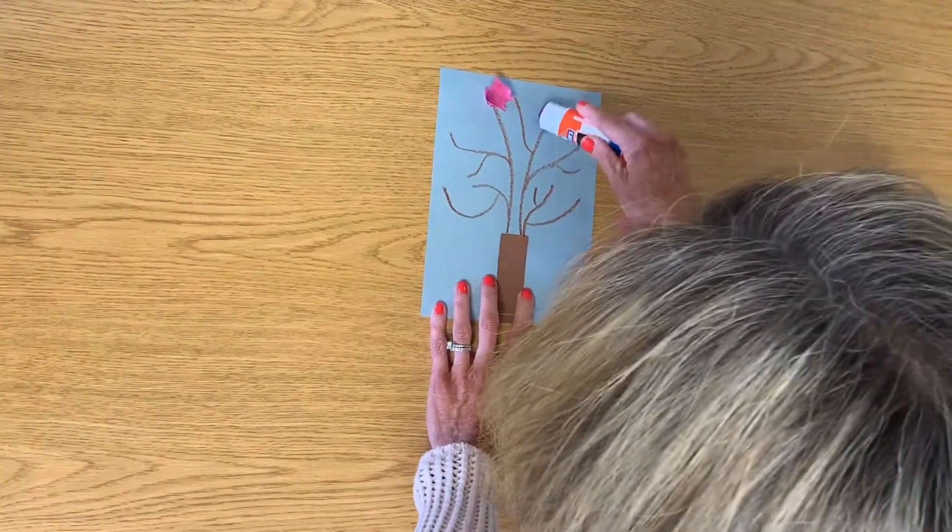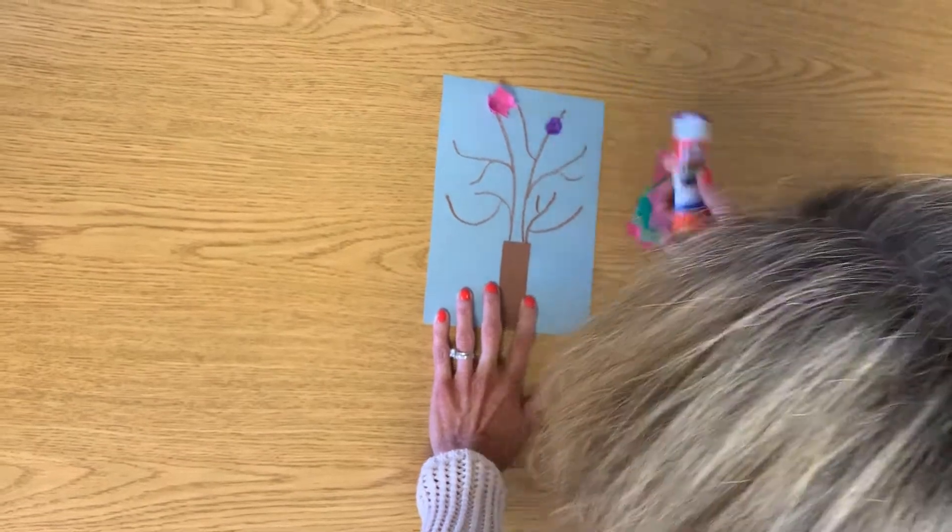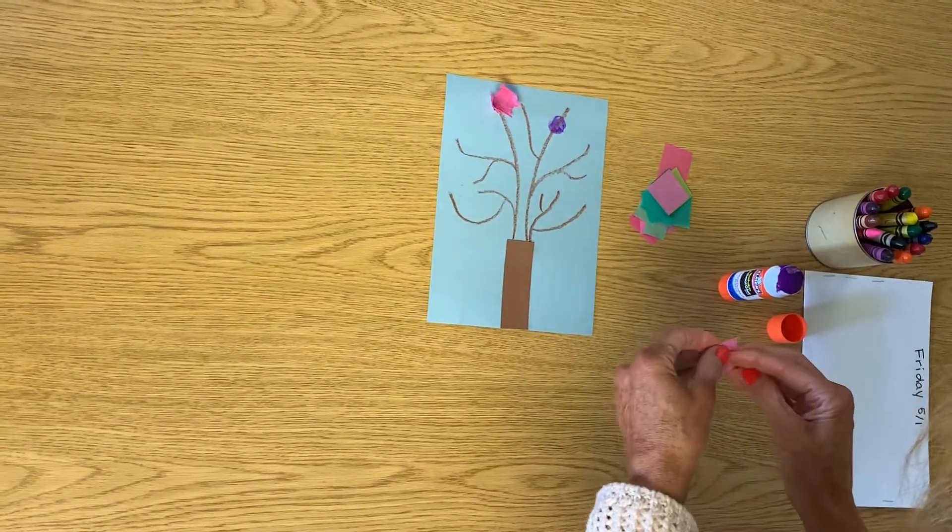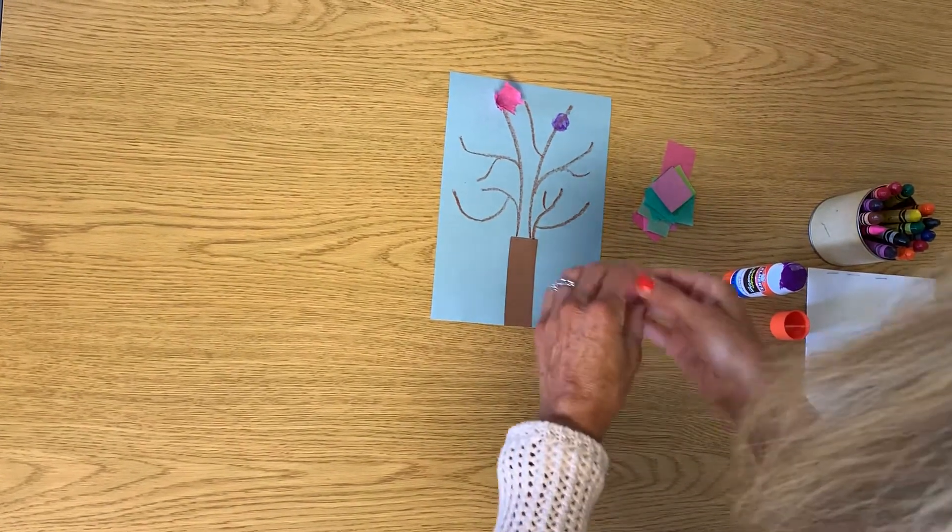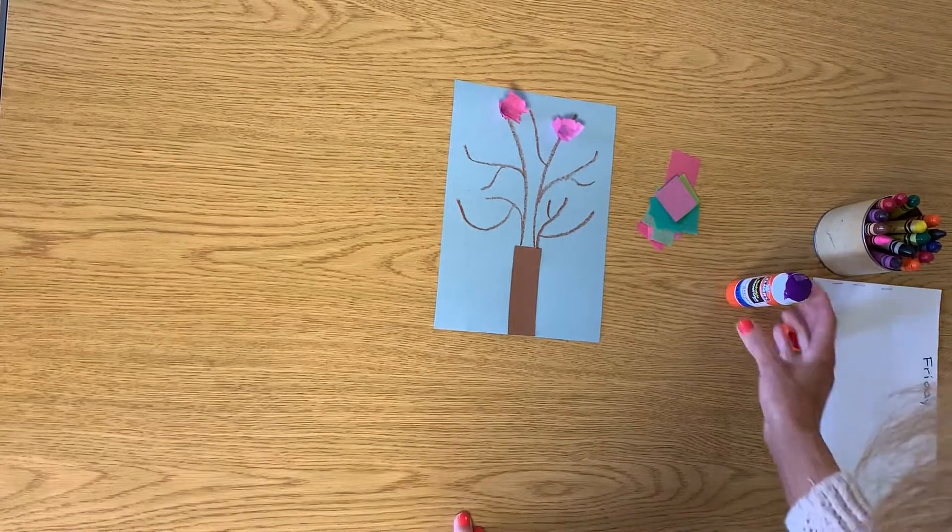Then I'm going to go to another spot on my tree. I want blossoms growing all around it, but they're only growing on the branches. Wrap the tissue paper around my finger. Put it right on the glue.